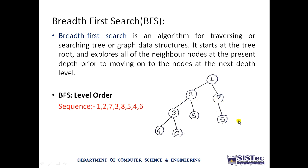In level 2, we explore nodes 3, 8, and 5 one by one. Exploring 3 gives us 4 and 6. Exploring 8 gives no children. Then we explore 5. By performing operations level by level, this is the core concept of the breadth-first search approach. The resulting traversal sequence is: 1, 2, 7, 3, 8, 5, 4, 6.